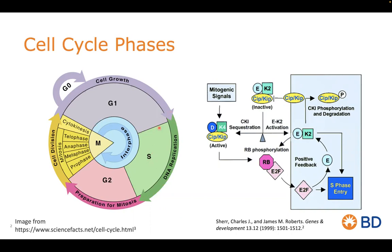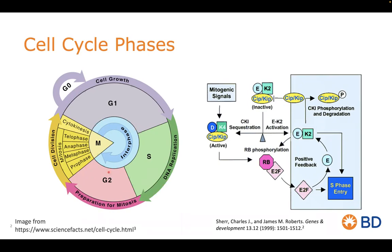There is usually a restriction point or checkpoint that occurs between G1 and S to make sure we have all the necessary components to move forward into DNA synthesis. Once we exit S phase, all of the DNA has been replicated — you now have twice the number of chromosomes. You then go through a second gap phase, G2, acquiring the necessary biomolecules to enter the mitotic phase. There is also a G2 checkpoint before mitosis to ensure DNA integrity is intact. This is a highly regulated process.